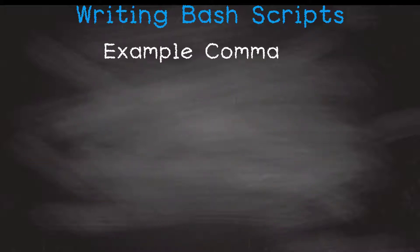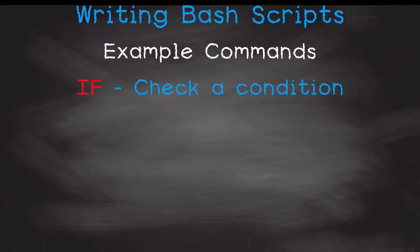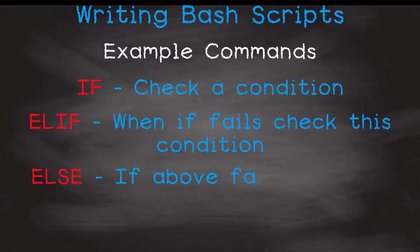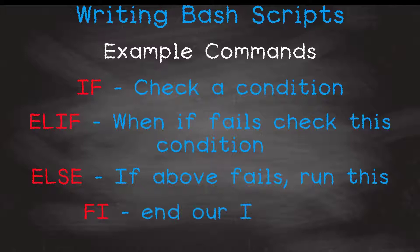For this example the commands we will be using are: if — check if something is true, with square brackets containing a condition in the middle then do whatever. Then we have elif — the else-if command — if the previous check failed, use another one to check some other condition. Then the else command — if the previous command failed, run these commands. And finally fi, which will close our condition block.